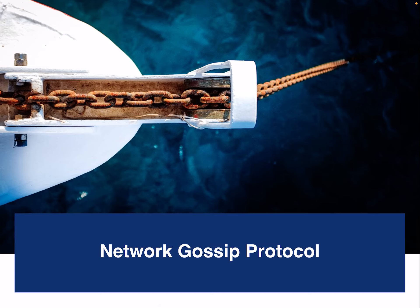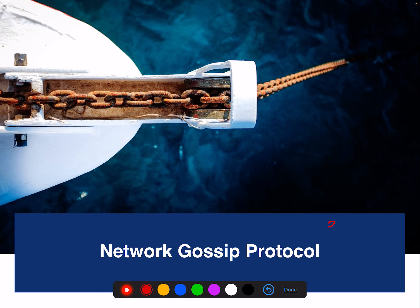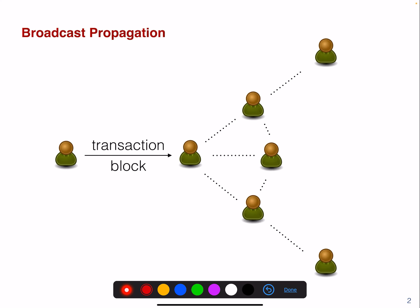So network gossip protocol. How does data propagate on the network layer? What are the mechanisms? How does a message get translated and transported from A to B to C? What happens in most permissionless blockchains is so-called broadcast or gossip propagation. It means if one node A knows or creates a transaction or a block, it sends this to its neighbors that are connected, and then it's just propagated further in the network.